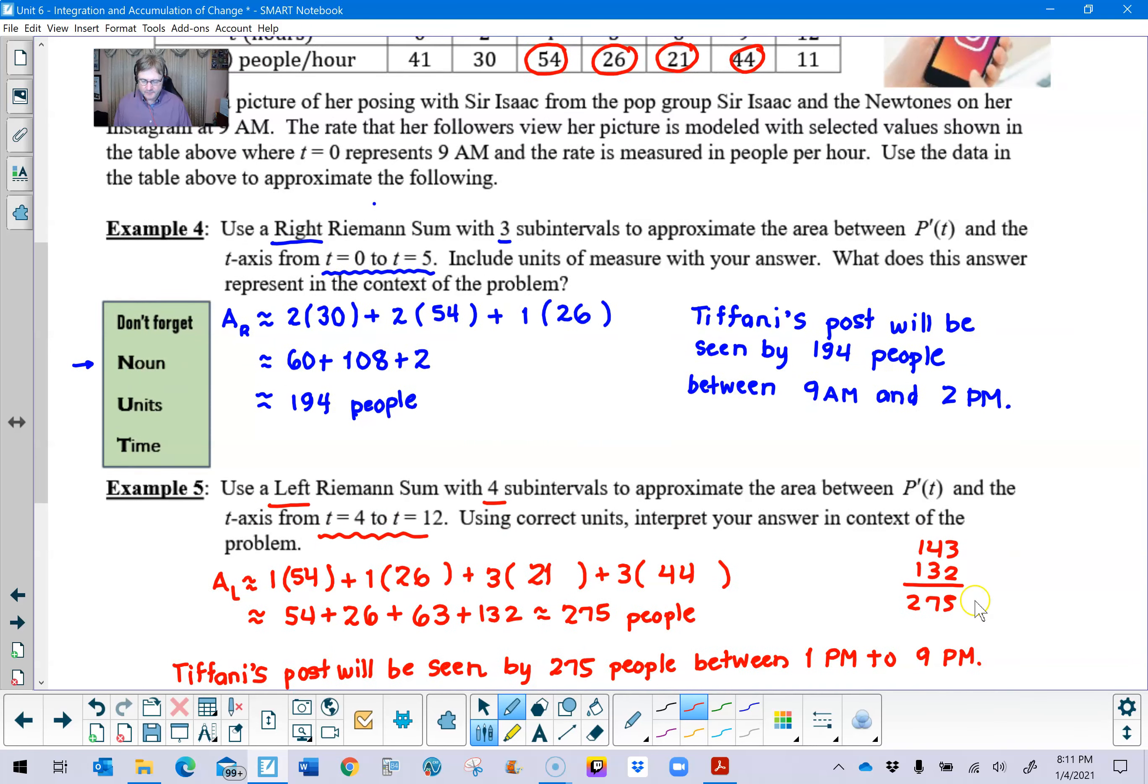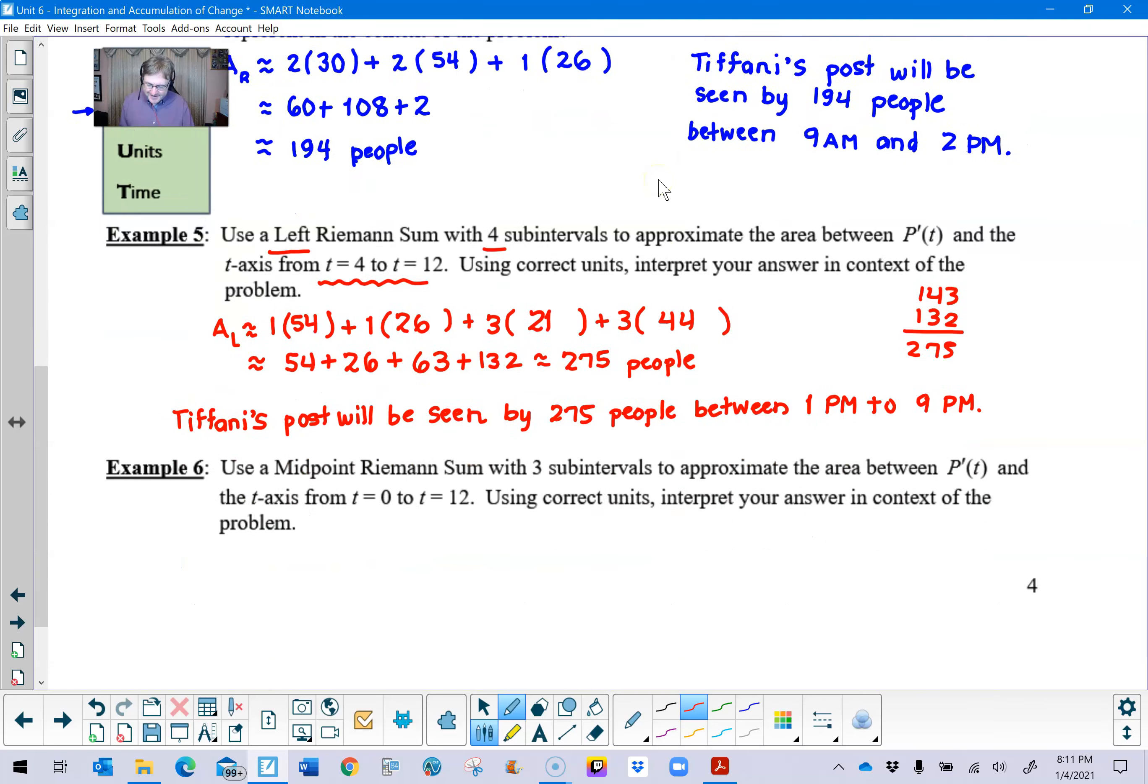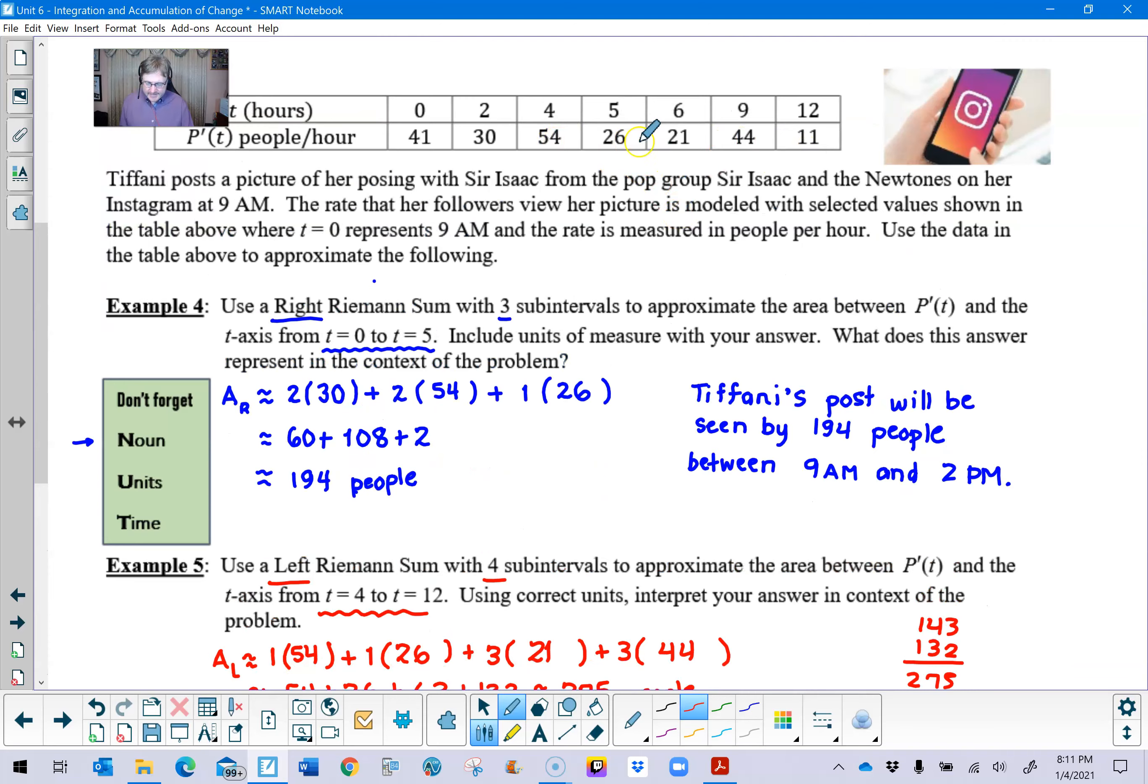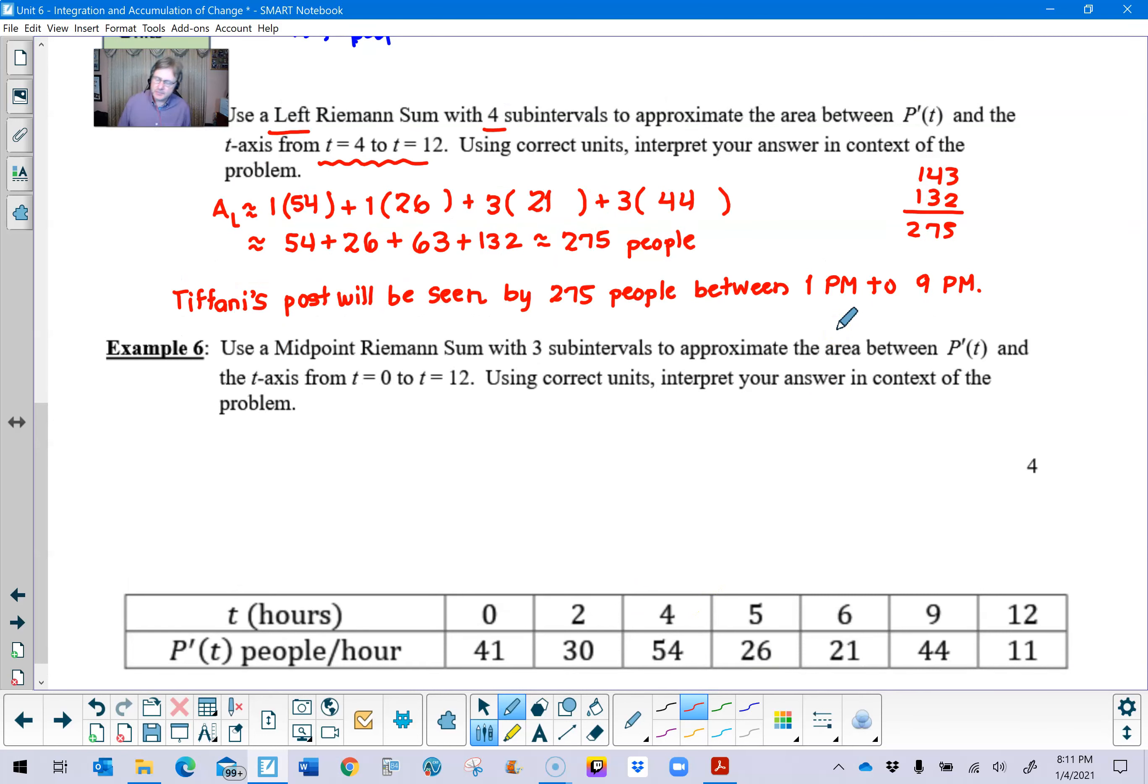So there's your contextual representation. Seems like more and more people are seeing Tiffany's post. The information is buzzing from all of her followers and everybody wants to get a good look at her with Sir Isaac. All right, let's take a look at part 6 here. And in this particular part, I think what I've got down below is I've taken this table and I've recopied it here so that I don't have to scroll back and forth. Now we're going to do something a little differently, you guys. So this time we are going to use a midpoint Riemann sum. So let's go ahead and underline that idea of midpoint. Three subintervals and we're still approximate the area between p prime and the t-axis between 0 and 12, which means we're going the whole 12 hours here. And one more time, we're going to go ahead and interpret the meaning of the problem in context.